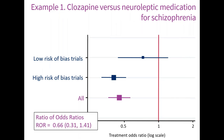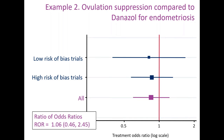We could also carry out a meta-regression and formally compare the subgroups statistically. Looking at the first example where the subgroups looked somewhat different, the meta-regression suggests there is no strong evidence the subgroups are statistically different — we have a ratio with a wide confidence interval. And for the second example where the subgroups are very similar, the rate ratio is close to one, again with wide confidence intervals.